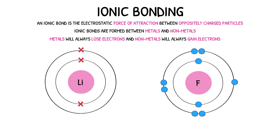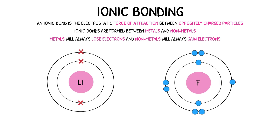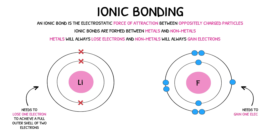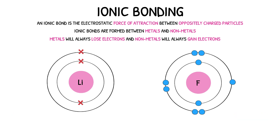Let's look at the bonding in lithium fluoride as an example. Lithium is the metal in this compound, and will need to lose one electron to achieve a full outer shell of two electrons. Fluorine is the nonmetal in this compound, and will need to gain one electron to achieve a full outer shell of eight electrons. To achieve this, the lithium atom will transfer its outer shell electron to fluorine. Now both particles have a full outer shell of electrons.